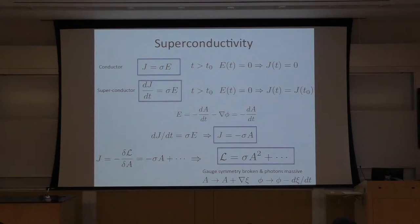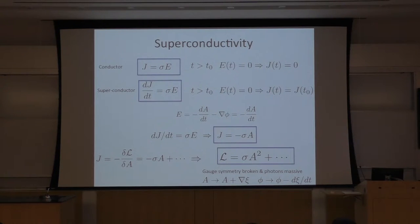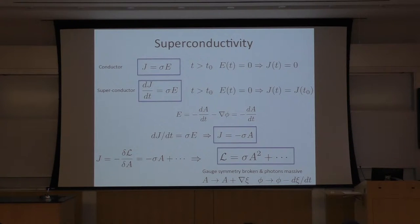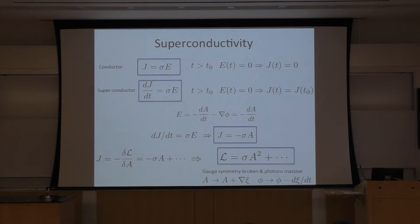What is superconductivity? First of all, we know that conductors are defined such that current is proportional to the electric field itself. So if you turn off the electric field, there is no current, J is zero. But the definition of a superconductor is different: instead of J being proportional to E, the derivative of J is proportional to E. Which means if I turn off the electric field, current is not zero — current doesn't change because dJ/dt is zero, but J itself is not zero. So this is the definition of a superconductor.